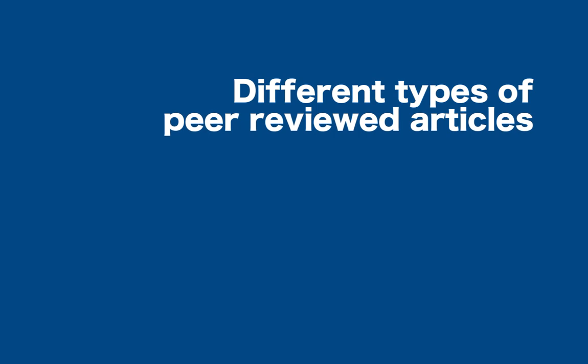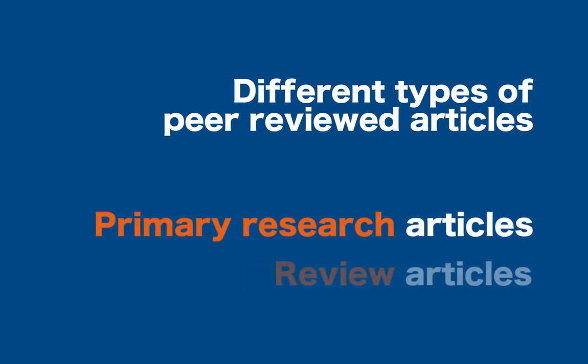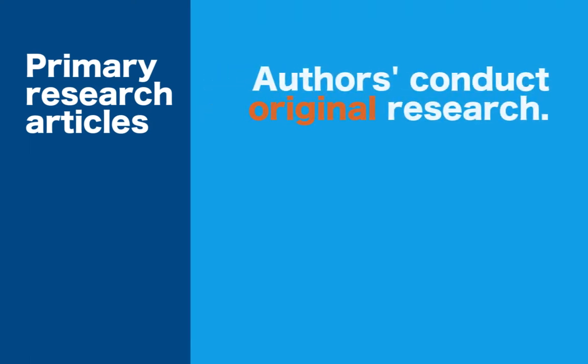There are different types of peer-reviewed articles depending on the kind of research being done by the author. Let's discuss two types: primary research articles and review articles. Primary research articles are where the authors of the article conducted their own original research in a clinic, laboratory, or out in the field. The published article is the detailed write-up of the research the author conducted during their study.